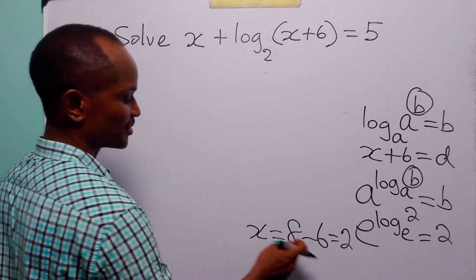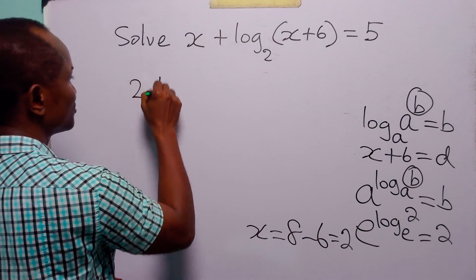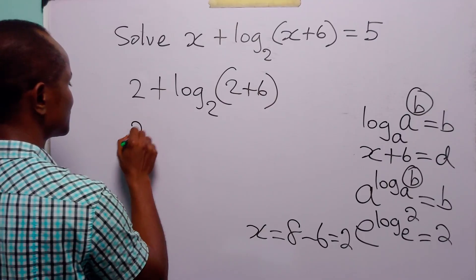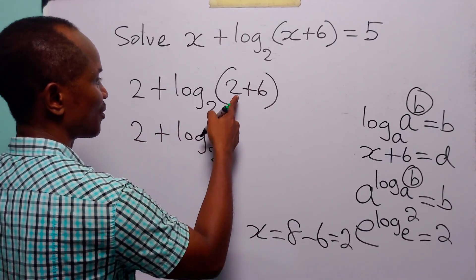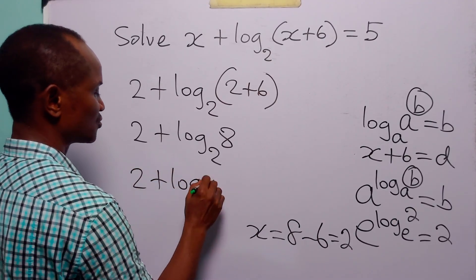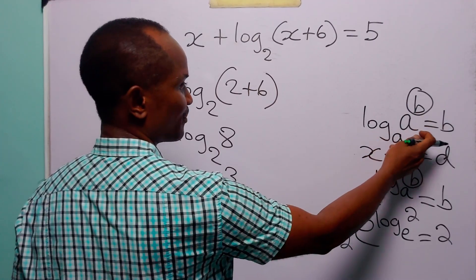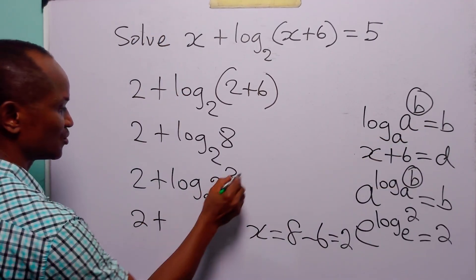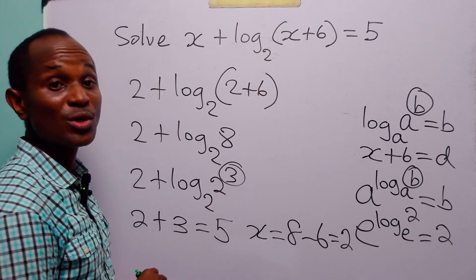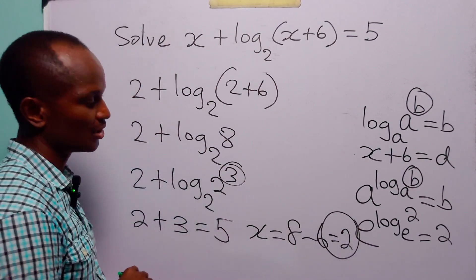As a simple check, let us substitute x equals 2 into the left-hand side of this equation. We have 2 plus log to base 2 of 2 plus 6, which is 2 plus log to base 2 of 8. Since 8 is 2 to the power 3, this is 2 plus 3, which equals 5. So the only value of x that satisfies this logarithmic equation is x equals 2.